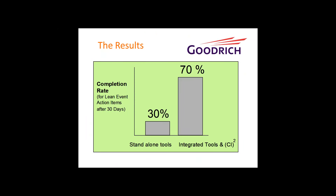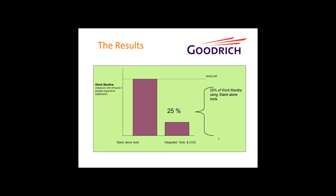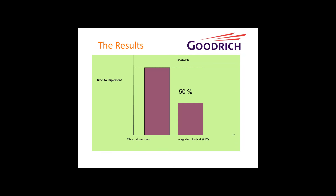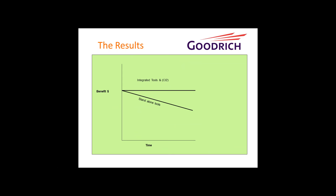Here are the results at Goodrich — these are real. The completion rate went to 70% versus 30% after 30 days — a big jump in getting things done. The amount of effort — number of hours by number of people — was reduced by 75% in terms of manpower needed. Time to implement was cut in half versus standalone tools. On a longer-range basis, standalone tools had a way of dropping off and benefits declining, where the integrated tools kept the pace, if not a little better.